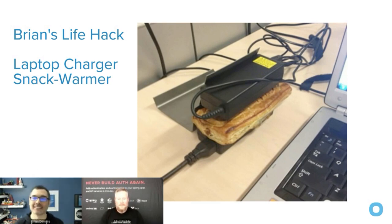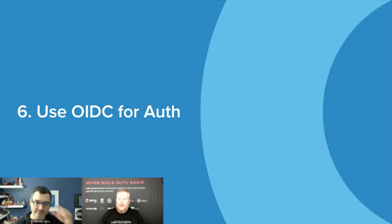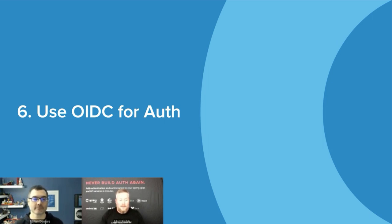The next tip is to use OpenID Connect for authentication. When I was an independent consultant for about 19 years before joining Okta, I worked with many enterprises that would keep users within the app, or in LDAP or a central store. Once I joined Okta and learned about OAuth and OpenID Connect, it was like wow — this is so much better. First, you're storing users external to your app so you don't have to worry about authentication and authorization. Second, you can blame someone else if there's a breach.